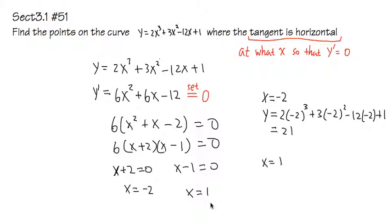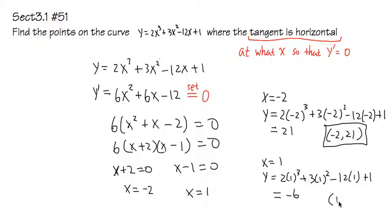Likewise, if x equals 1, you set y equals 2 times 1 to the third power plus 3 times 1 squared minus 12 times 1 plus 1. The y value you get is negative 6. So the first point is negative 2 comma 21, and the second point is 1 comma negative 6. These two are the answer.